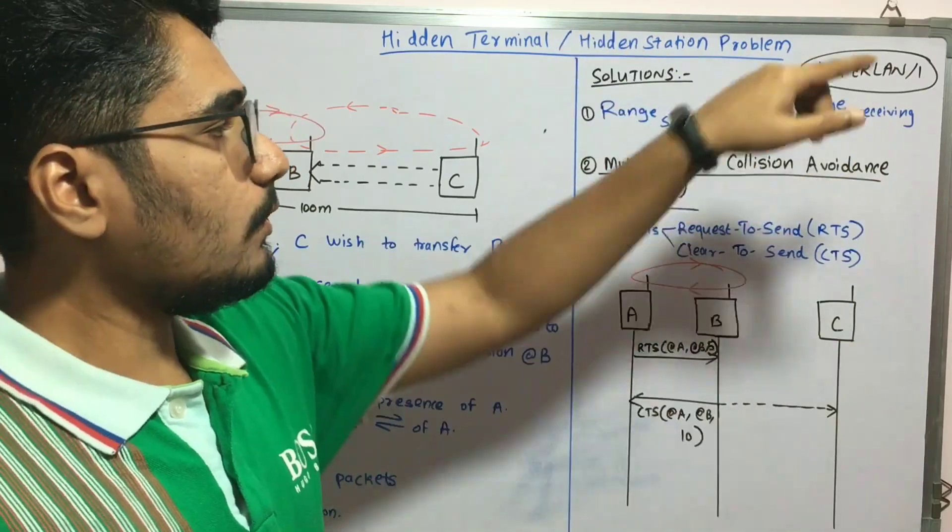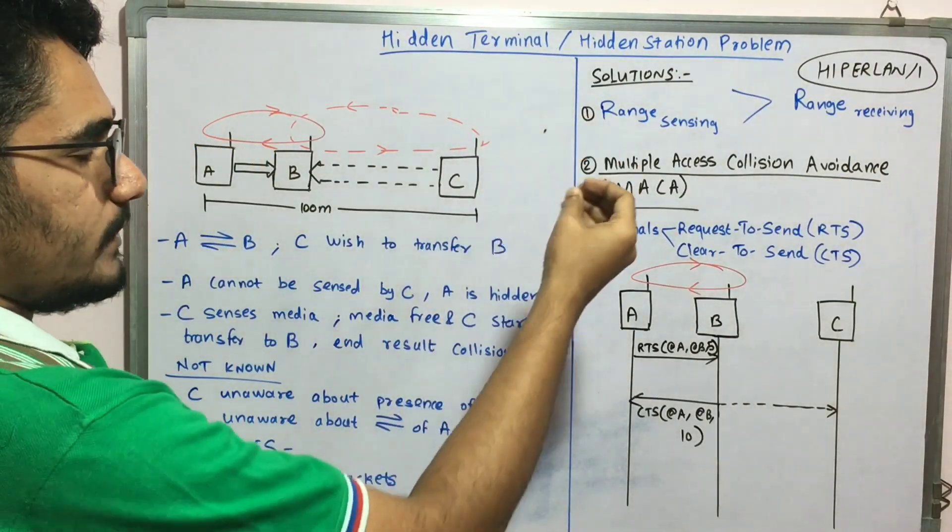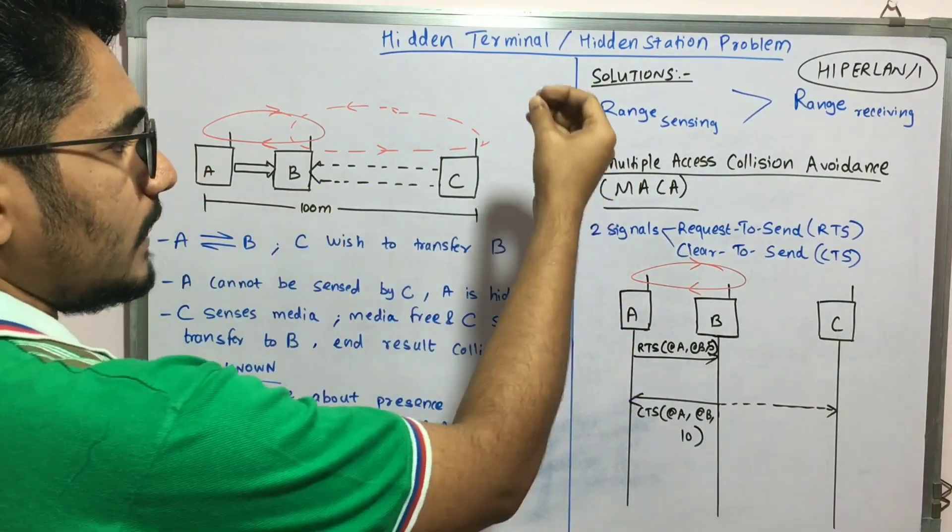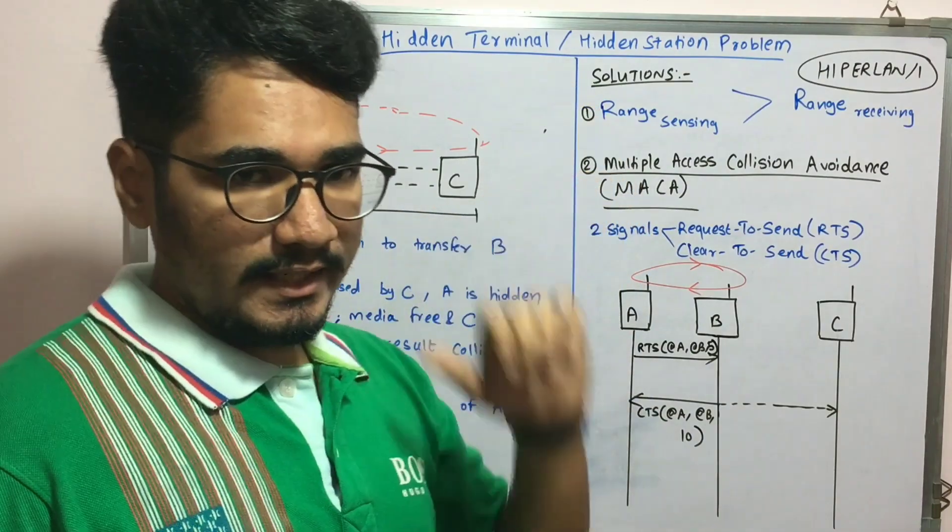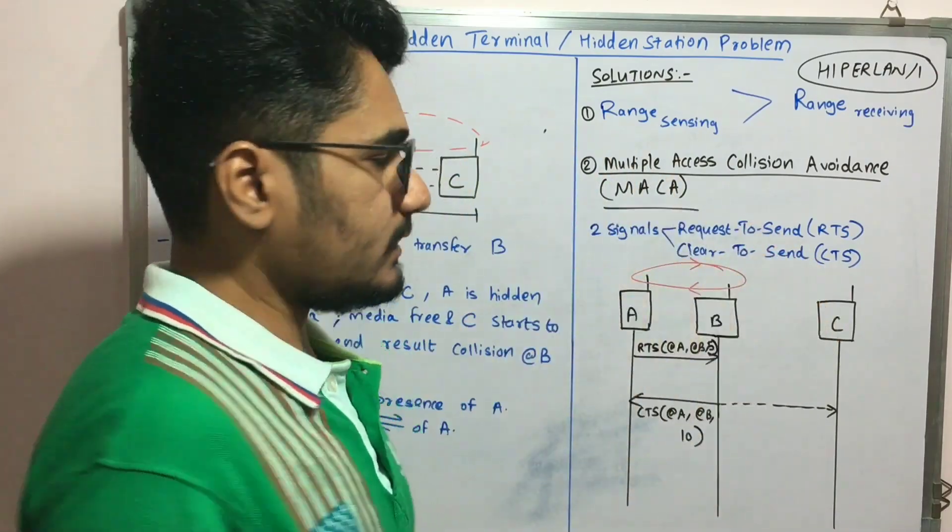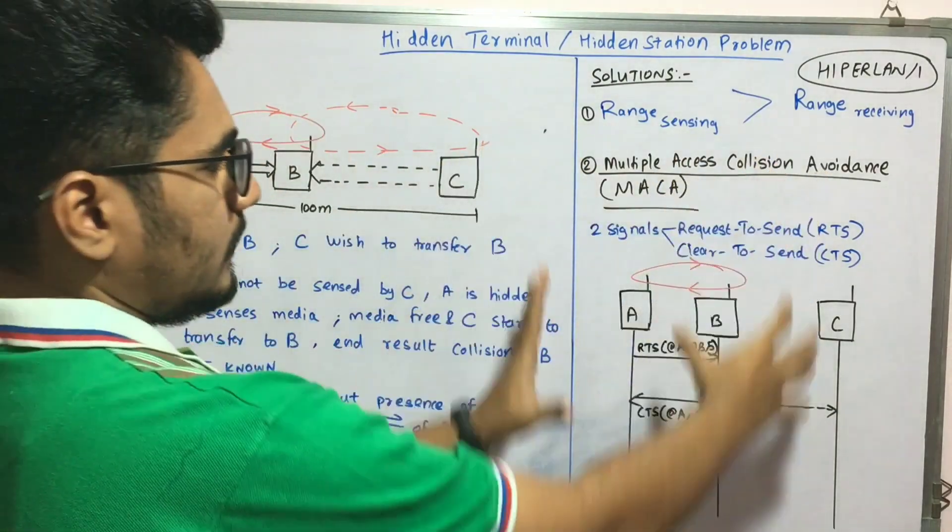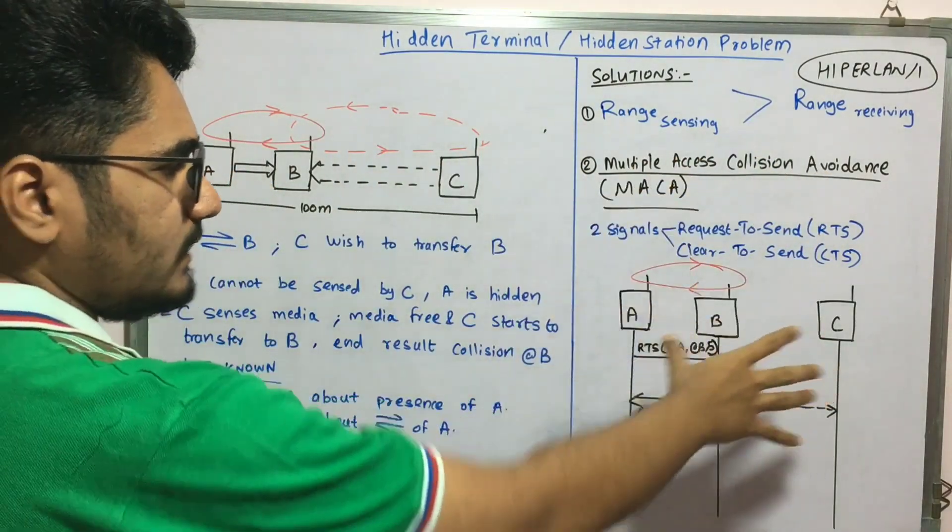You could also use a provision called MACA, which is called multiple access collision avoidance. What it basically does is it has two signals: request to send (RTS) and clear to send (CTS). We'll consider this scenario and draw some lines here.